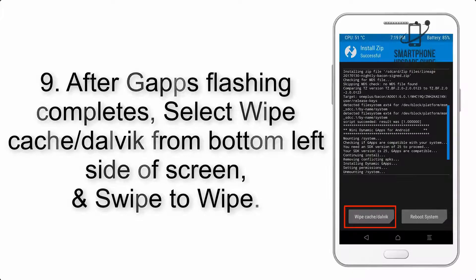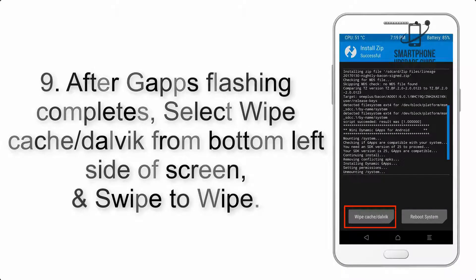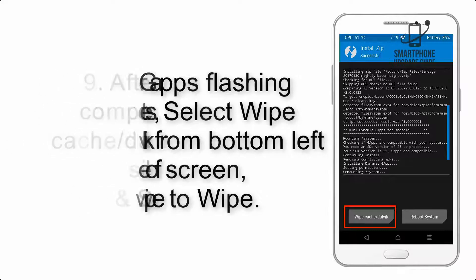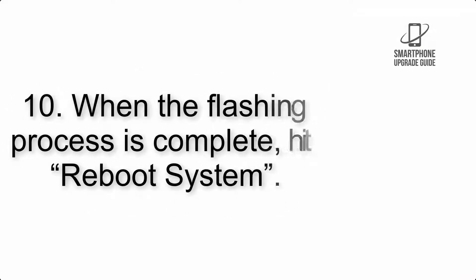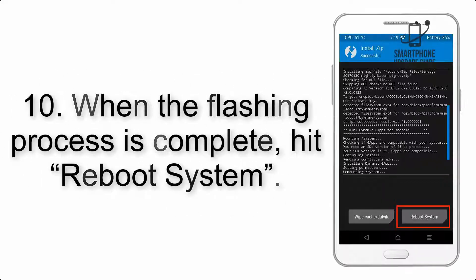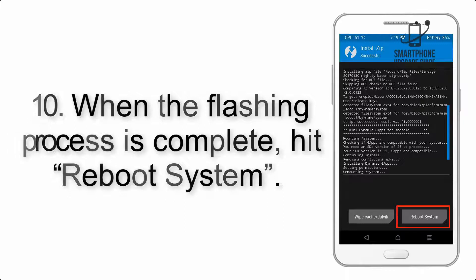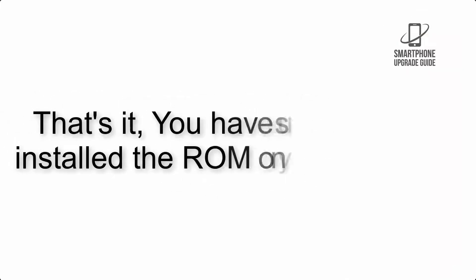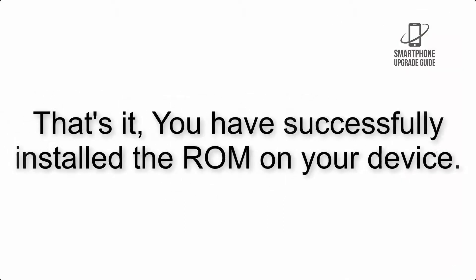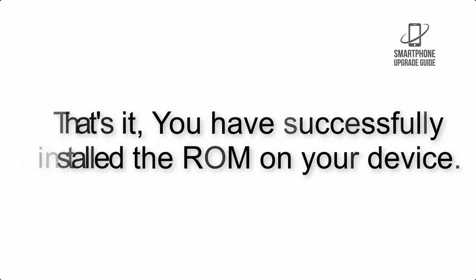Step 8: Flash the GApps zip package in the same manner. Step 9: After GApps flashing completes, select Wipe Cache and Dalvik from the bottom left side of the screen and swipe to wipe. Step 10: When the flashing process is complete, hit Reboot System. That's it — you have successfully installed the ROM on your device.